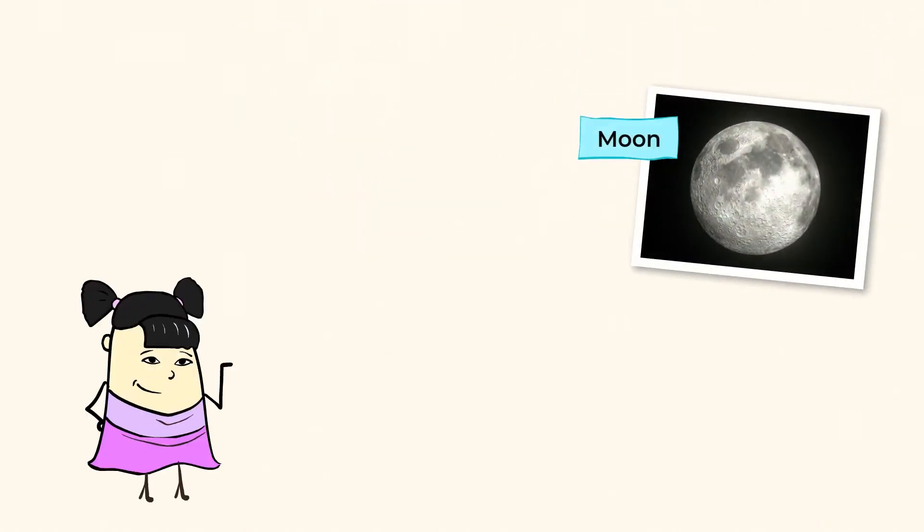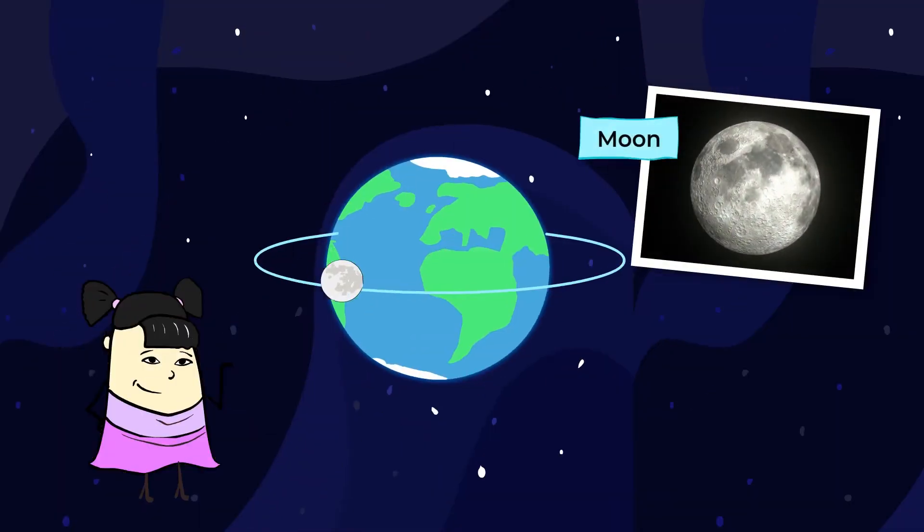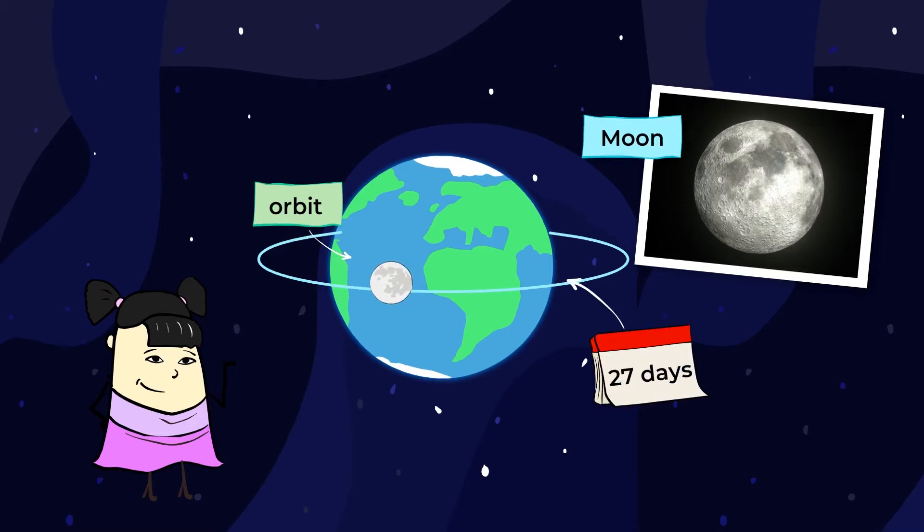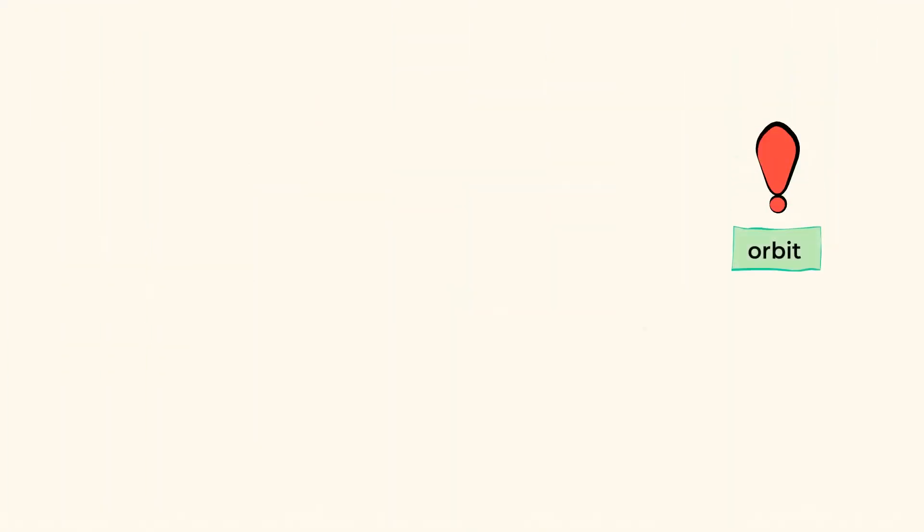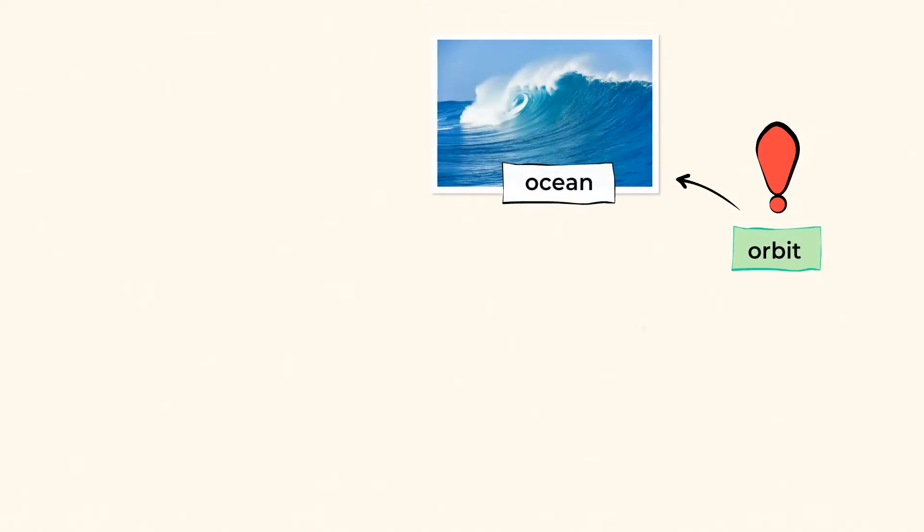The moon itself is a big, dusty ball of rock that orbits Earth. Orbit means that it travels around and around the Earth. It takes the moon about 27 days to orbit Earth. This orbit is important for us, because it affects our oceans.